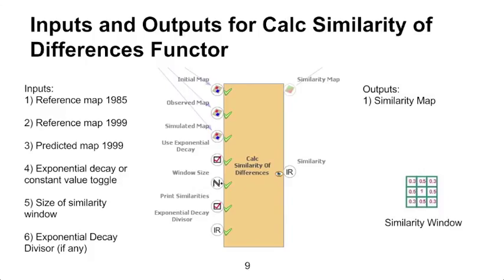You can select between exponential decay, which has high values at the center of the window and decreasing values further away, or a constant window which has only one value. For the purposes of this video, we will be looking at the exponential decay option.